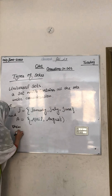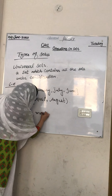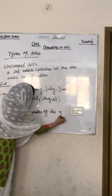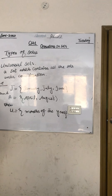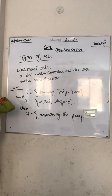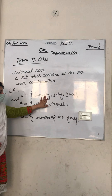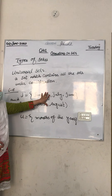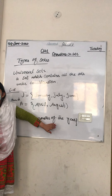So U = months of the year. Since J contains months of the year and A contains months of the year, the universal set U = months of the year. This is the universal set — it is the broader set that contains all the elements under consideration. Clear?